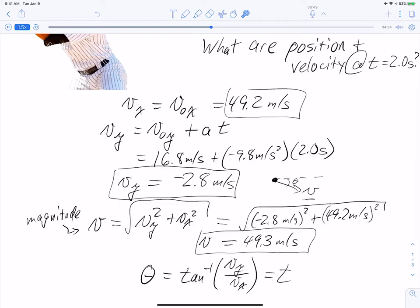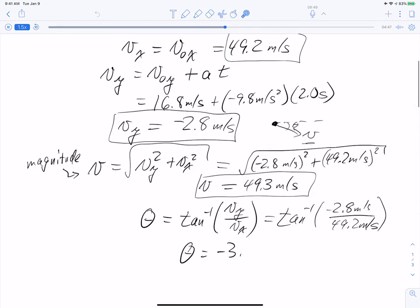And when we plug that in, if you keep your minus signs there, of course, remember to have your calculator in degree mode, it'll automatically give you a negative number. So I've got negative 2.8 meters per second divided by 49.2 meters per second. And that gives me that theta is equal to negative 3.2 degrees.